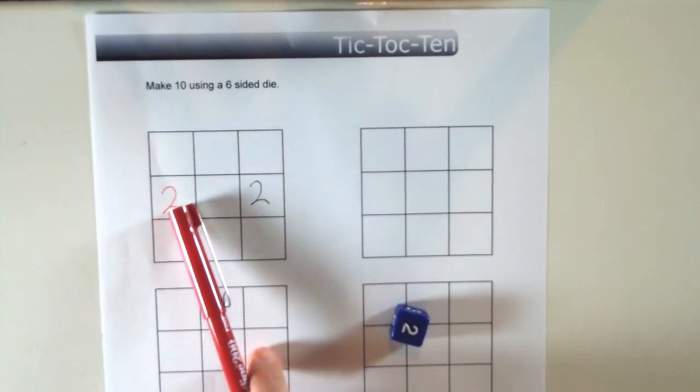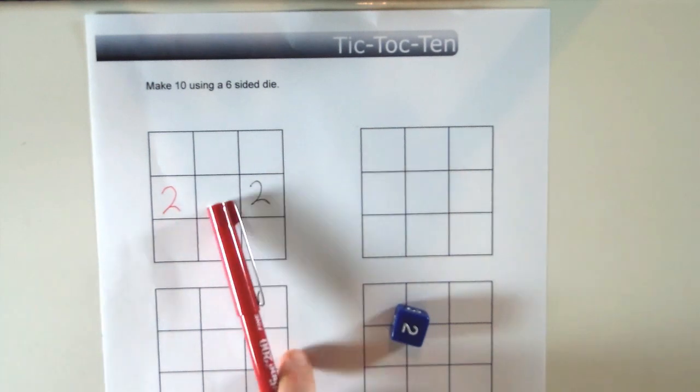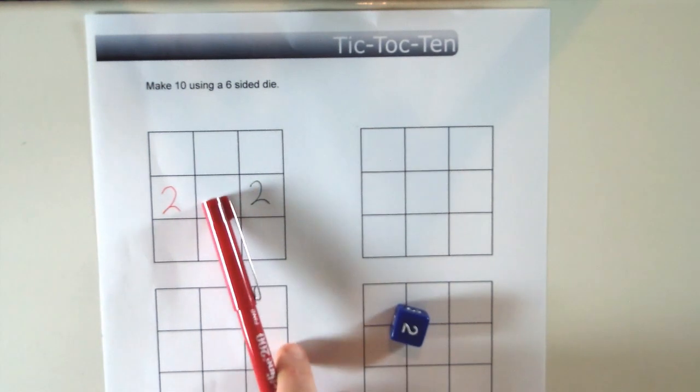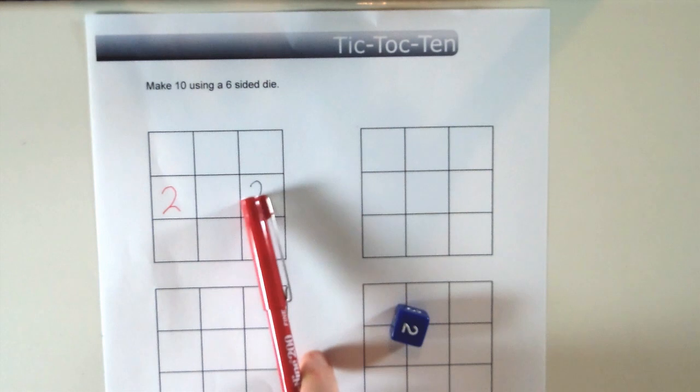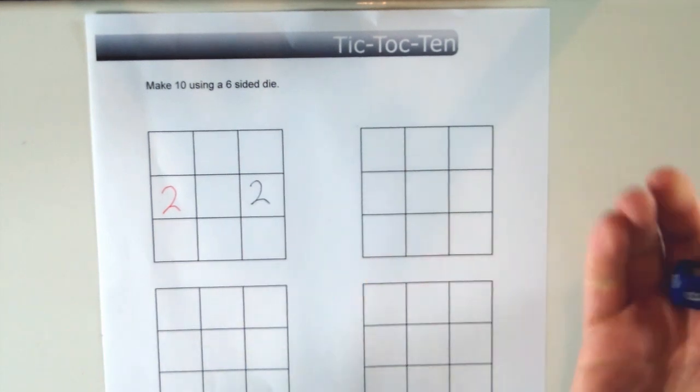Now hopefully someone's going to roll a 6. So they can put the 6 there and it'll be 2 plus 6 plus 2 equals 10.